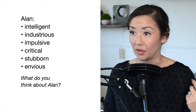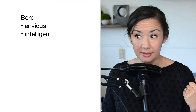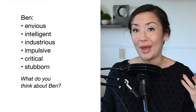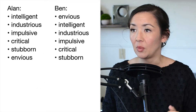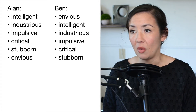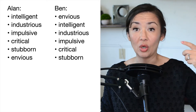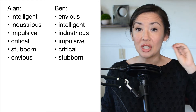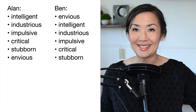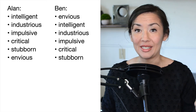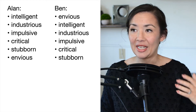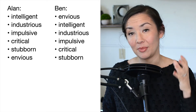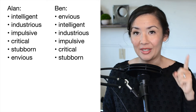Now let's look at another person. This gentleman's name is Ben. He's envious, intelligent, industrious, impulsive, critical, and stubborn. What do you think about Ben? What is your perception of Ben's character? When we compare these two, note that the only difference is the first word that has been presented to you. In Alan's case, we begin by telling you that he is intelligent. And when you hear the word intelligent, your type 1 processing system starts jumping to conclusions and decides that this person likely has positive qualities because he's intelligent. We like people that are intelligent. So we kind of flavor all of the following information in a positive light because we've already made assumptions about Alan from that very first description.